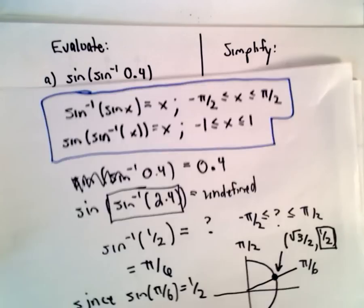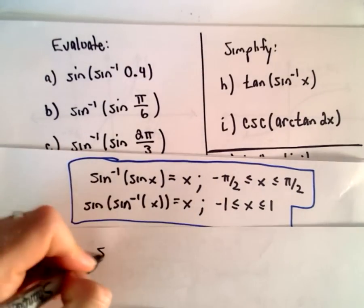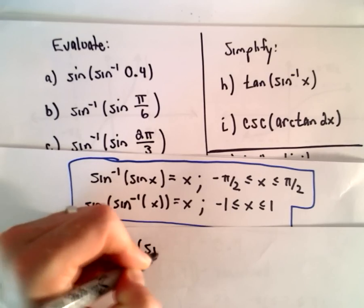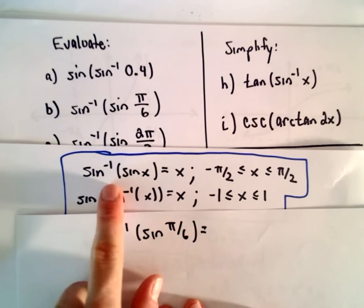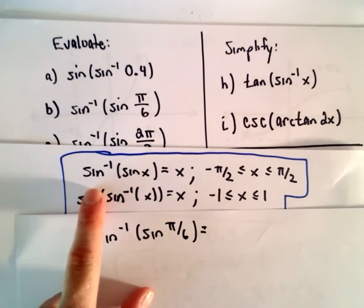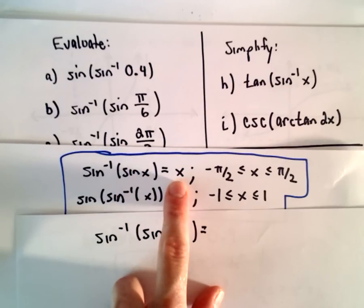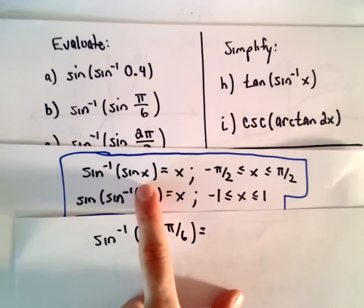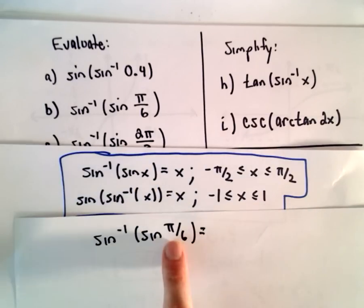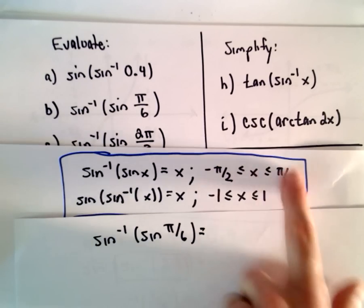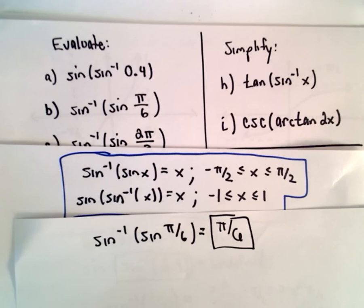So you got an extra example there. For part B, we have inverse sine of sine of π/6. Looking at the cancellation law — inverse sine of sine of something gives you that something, as long as the angle is between negative π/2 and positive π/2. Well, π/6 definitely falls in that interval, so we simply get π/6 as our solution to part B.